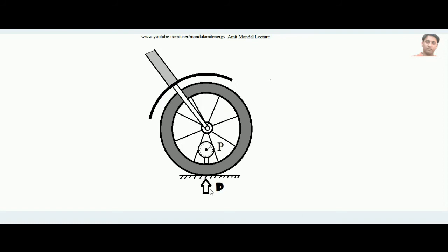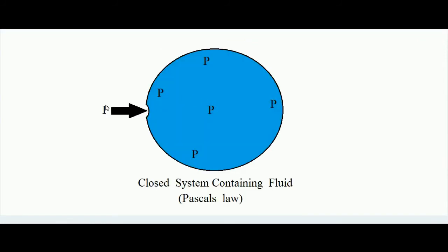One more proof: suppose we believe the pressure is higher at one point compared to others. There is a rule that fluid always flows from high pressure to low pressure. If pressure were higher at one point, fluid would start flowing continuously from high to low pressure — but continuous motion would violate conservation of energy, since the fluid fights viscous forces and would be creating energy for free. That is not possible, confirming Pascal's law.